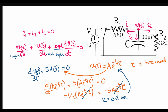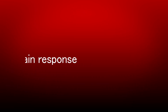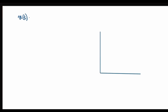Substituting τ back into the solution, the voltage V(t) = A·e^(−t/0.2). This is the voltage across the capacitor, valid for time greater than 0 plus, when the switch is turned on.